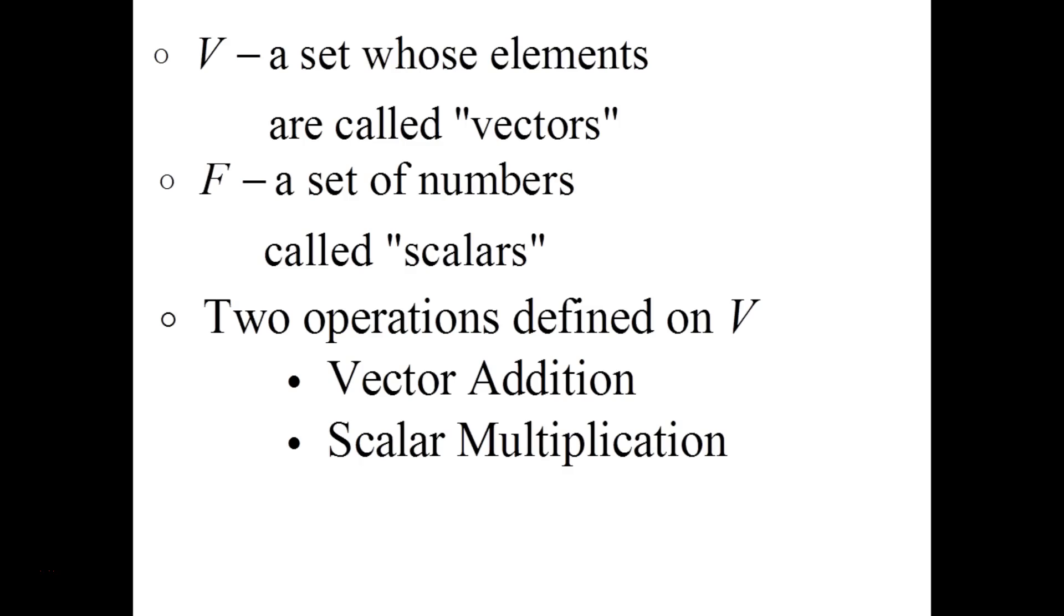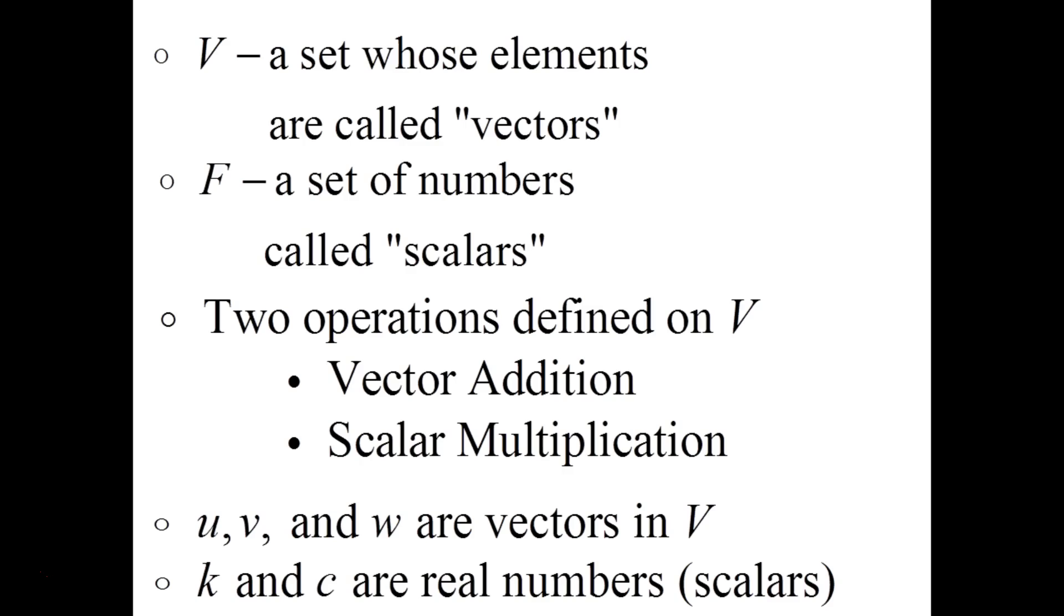It's the two sets with the two operations defined. Then what we have will be a vector space if it satisfies ten axioms. So in these axioms what I'm going to do is use the letters U, V and W to represent vectors and the letters K and C, the variables K and C to represent the real numbers. So U, V and W are elements of V vectors and K and C are elements of F. They're scalars, their numbers.